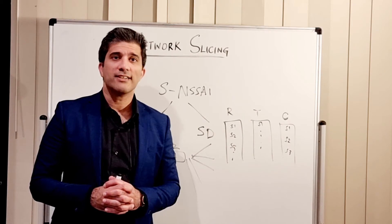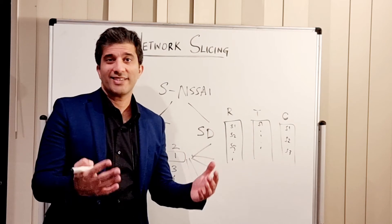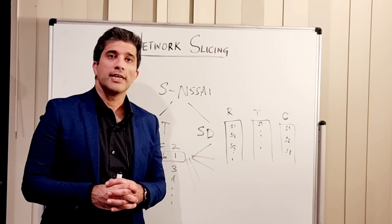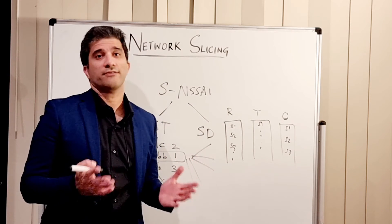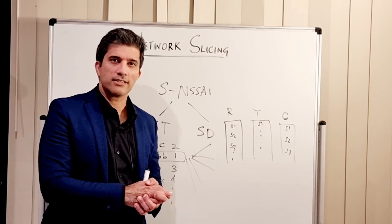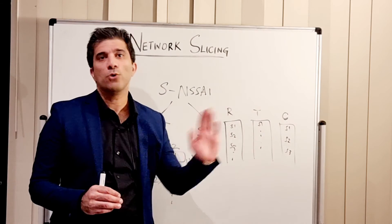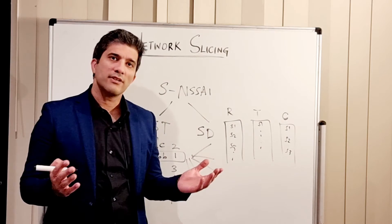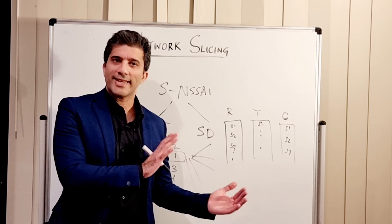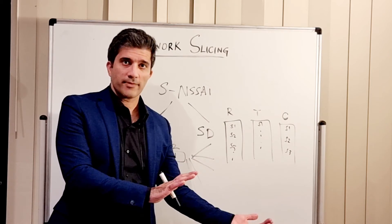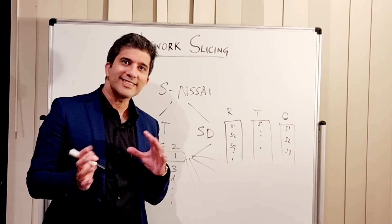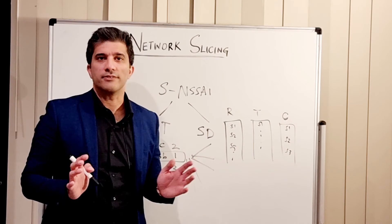On the core side, consider latency-sensitive services such as remote surgery. A latency of 100 or 200 milliseconds would not be acceptable — you need to bring it down to 10 ms, 5 ms, or even 1 ms. To achieve that, you must place your UPF (User Plane Function) closer to the UE. For a particular slice serving UEs in that application, you place that core entity near the end user — that is your slice configuration and how differentiated services are delivered across network domains.